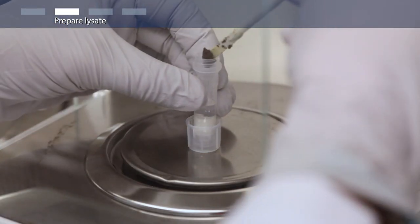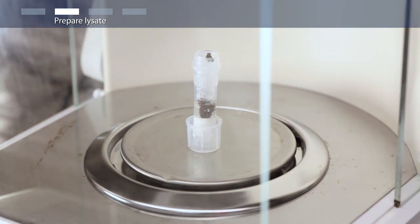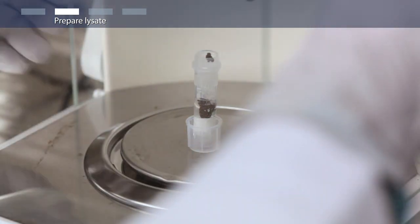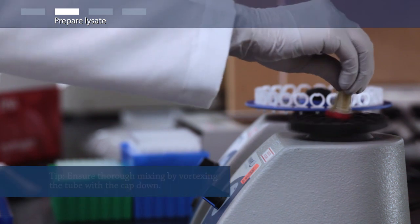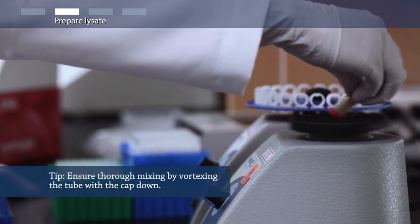First, add 0.2 grams of the stool sample and 600 microliters of lysis buffer to the bead tube. Vortex until the sample is thoroughly dispersed in the liquid.